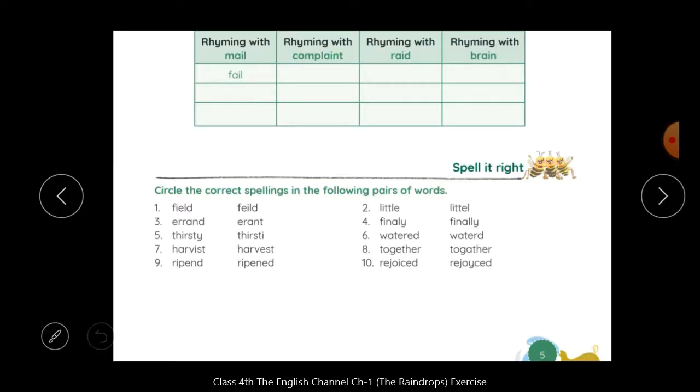First one, field. Which word is spelled correctly? F-I-E-L-D. Field. So, you will circle it. Next, errand and little. Which one is right? Yes, first one is little. Third, errand. Which one is right? Errand. Next, finally. Which one is correct? Yes, this spelling is correct, finally. And next thirsty. What is the spelling of thirsty? T-H-I-R-S-T-Y. Thirsty. Circle this word.